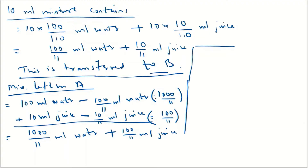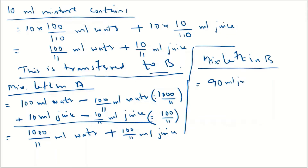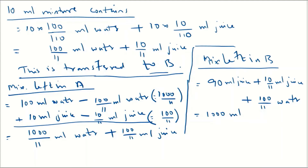Now looking at glass B after receiving the 10 ml mixture: B already had 90 ml of juice. We add 10/11 ml of juice to it, giving 90 + 10/11 = 1000/11 ml of juice. The 100/11 ml of water from the mixture remains separately, so B contains 1000/11 ml of juice plus 100/11 ml of water.